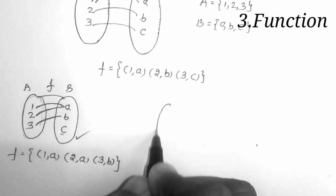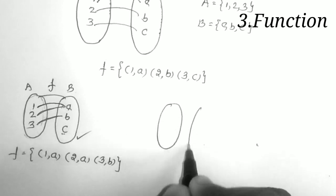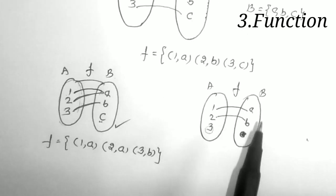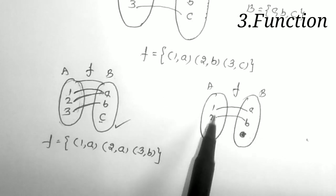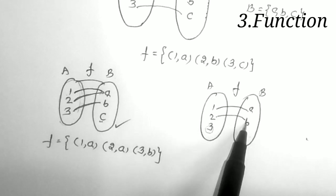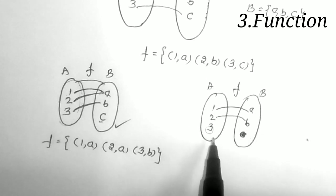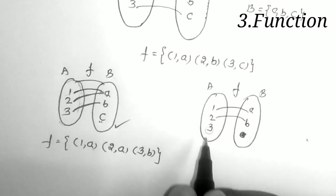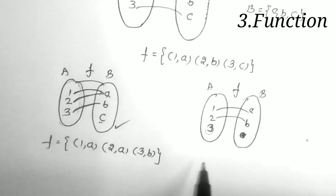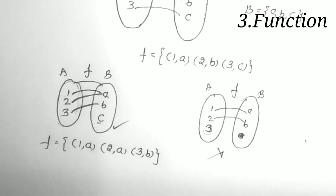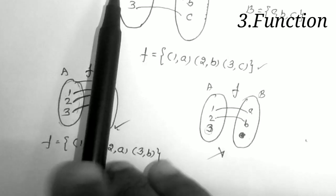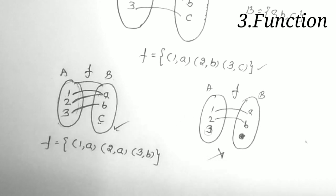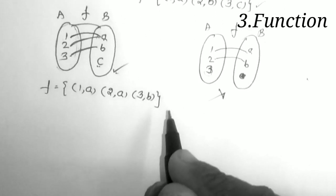Next example: A = {1, 2, 3} and B = {a, b}. If 1 is connected to a and 2 is connected to b but 3 is not connected to any element of B, then this is NOT a function. The reason: 3 is not connected to any element of B, so not all elements of A are connected.